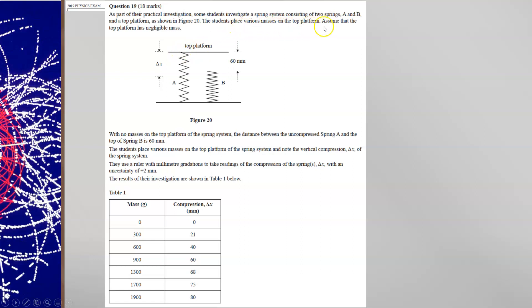They place various masses on top of the platform, and you can assume the top platform has a negligible mass. That means that the masses will compress the springs and the first spring A will compress before spring B begins to compress.